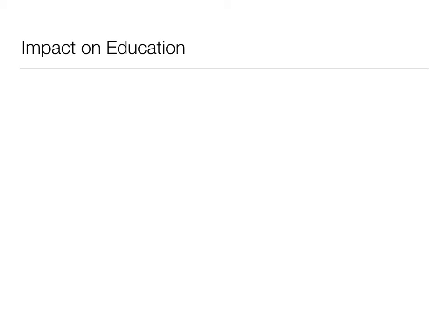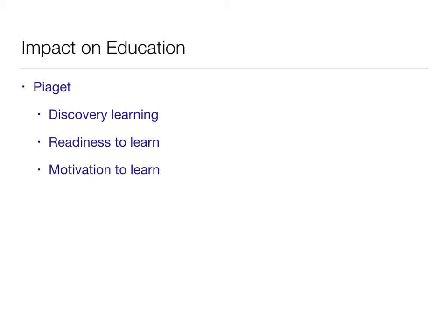Both Piaget and Vygotsky influenced education. Piaget was really great for discovery learning — one of his hallmark contributions. He viewed children as little scientists, and discovery learning is about being given things and finding out the answer yourself. His ideas also influenced the concept of readiness to learn — when children are developmentally ready to learn different things comes out of Piaget's theory, very similar to his stages. The motivation to learn, that investigative little-scientist drive, is a perspective we get from Piaget in modern education.